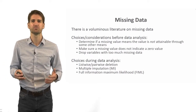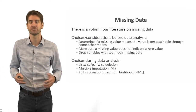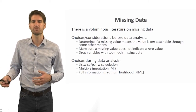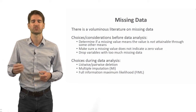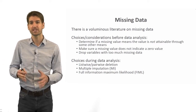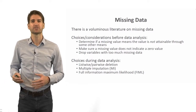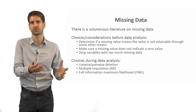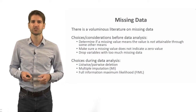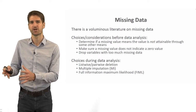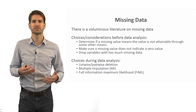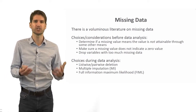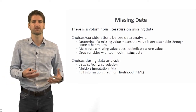First, determine whether a missing value means the value is actually not attainable through some other means. It could be that you're able to recover that missing value — perhaps someone forgot to transcribe it, but it's sitting on a physical paper document and you can find the value. I highly recommend doing that, because the absence of that value for a particular observation could have implications for your findings and their interpretation. Also make sure a missing value does not indicate a zero value.